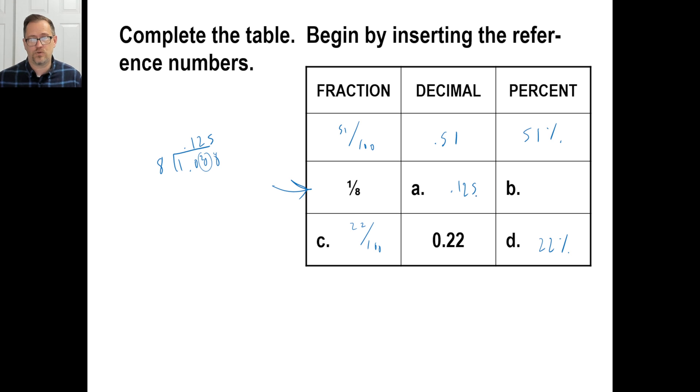Now, to change a decimal into a percent, you simply move this over twice to the right. So your percent will be 12.5%. You'll have one or two of those today. Knock them out. Have a great time. And I'll see you guys next time. Take care.